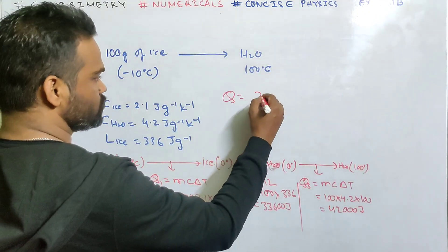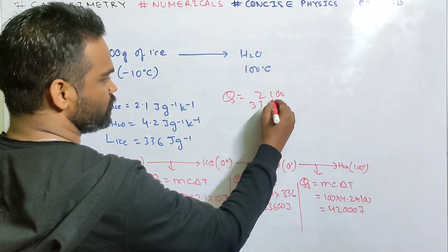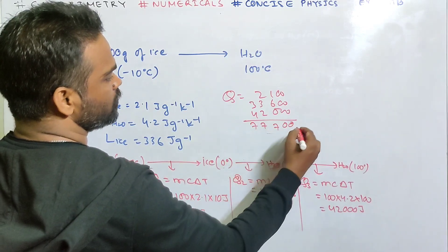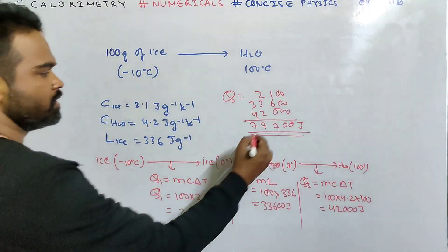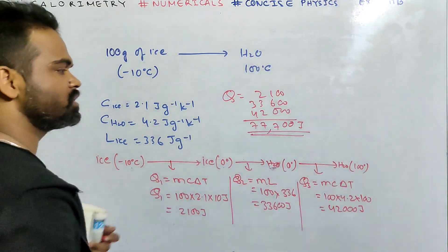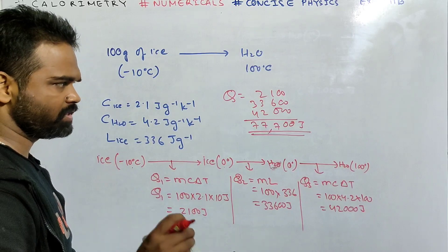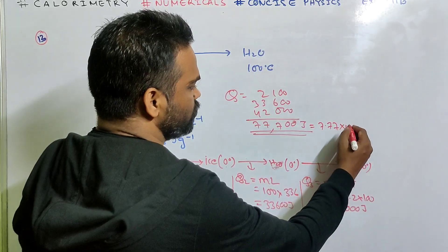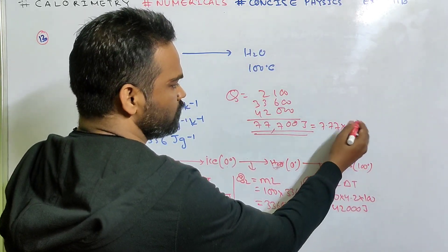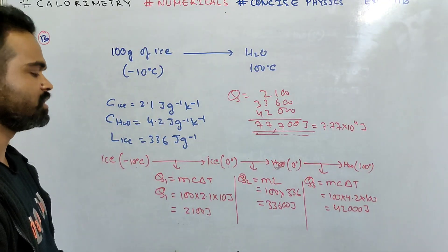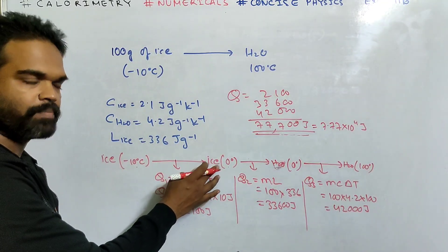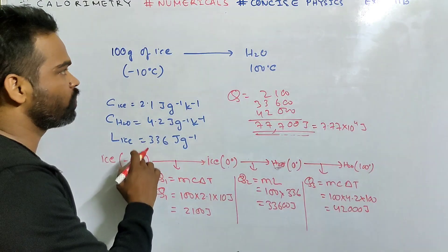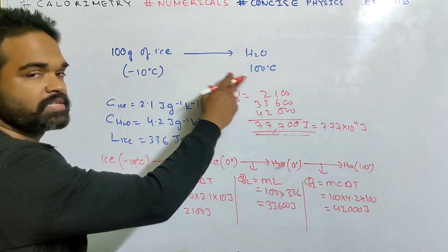Total heat = Q1 + Q2 + Q3 = 2100 + 33,600 + 42,000 = 77,700 joule. The answer given is 7.77 × 10⁴ joule — same thing. Ice at −10°C changes to ice at 0°C, then to water at 0°C, then to water at 100°C. It happens step by step.